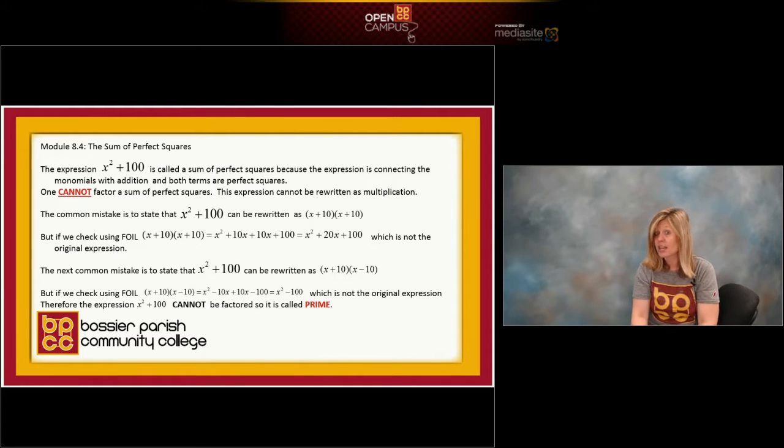Outers would be x times negative 10 which is negative 10x. Inners would be positive 10 times x which is positive 10x. And last would be positive 10 times negative 10 which is negative 100. Now when you multiply conjugates x plus 10 times x minus 10, we know the outers and inners are going to be opposites, additive inverses of each other and cancel out.